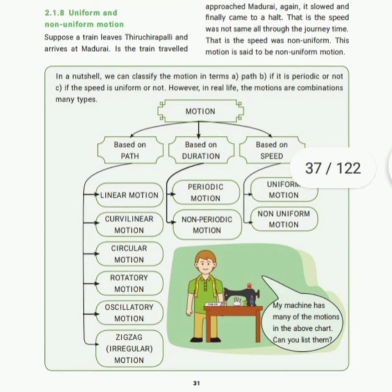Next is periodic and non-periodic motion. Motion that repeats at equal intervals of time is called periodic motion. For example, a clock makes two rounds in one day at correct intervals. Another example is a bouncing ball bouncing a certain number of times at equal intervals. Motion that does not repeat at uniform intervals is non-periodic motion — for example, the swaying of a branch in the wind, since wind is not periodic.